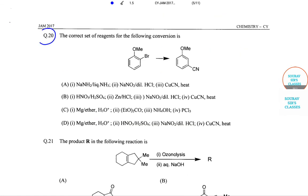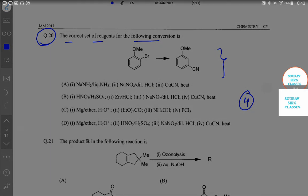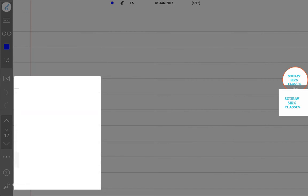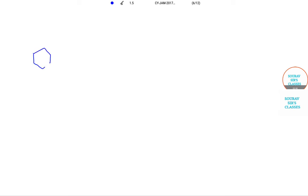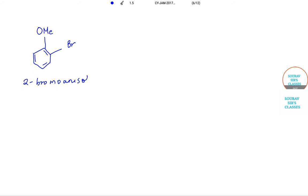Let us now do the next question, which is question number 20. The question asks for the correct set of reagents for the following conversion, and we need to choose the most appropriate option out of the four. So we have oxygen and methyl — this is bromine — and this is 2-bromoanisole.